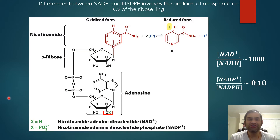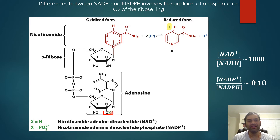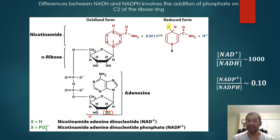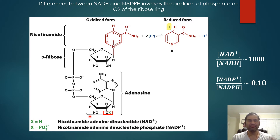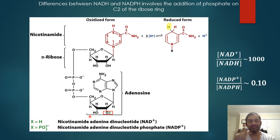The structure of NADH and NADPH is exactly the same, but note the green X in the structure. If it's a hydrogen, you have plain NADH. If you replace that X with an inorganic phosphate, then you have NADPH or NADP+ if it's giving away its reducing equivalents. The only difference is the phosphate — and what a difference that makes, because that phosphate in NADPH or NADP+ confers totally different roles in the cell and totally different ratios between the oxidized and reduced forms.